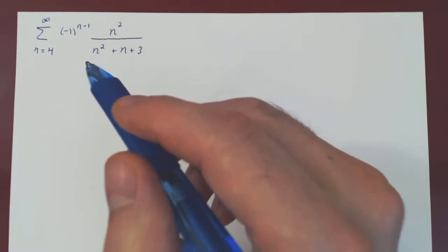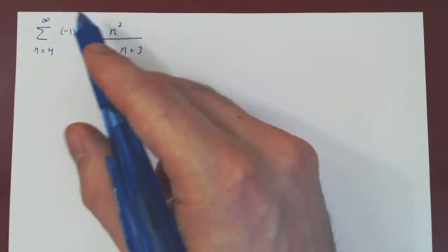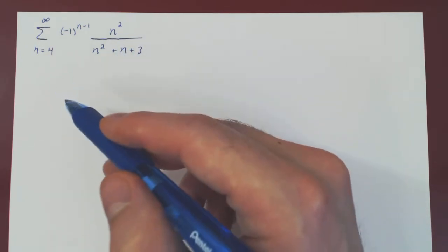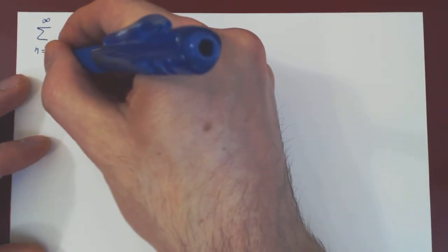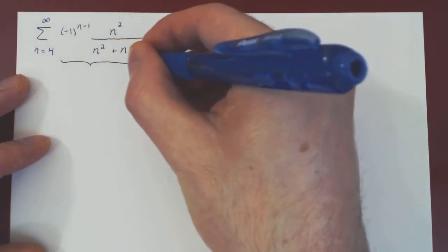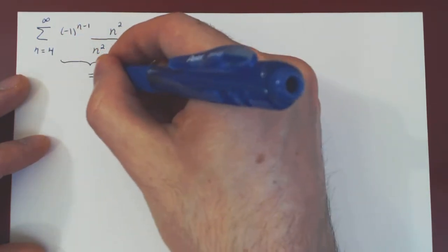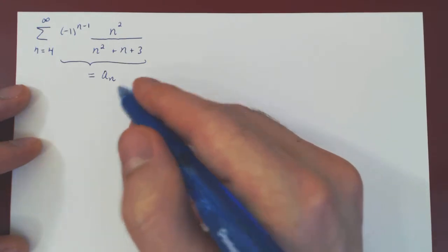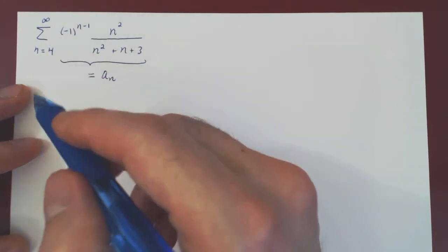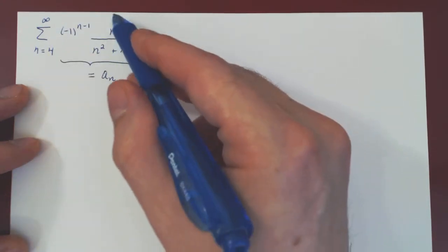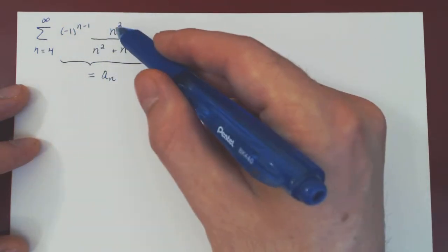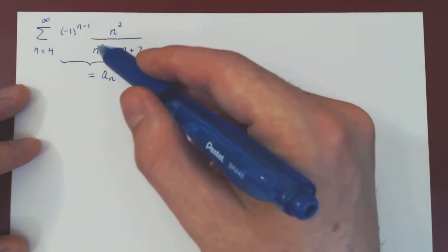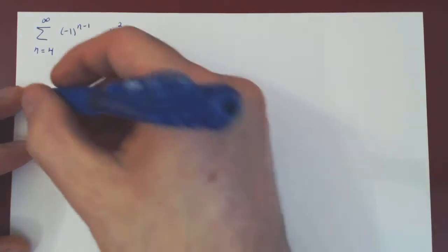Okay, so in this video, we will try and determine whether the alternating series converges or diverges. We're looking at summing the terms of this sequence, which we call as usual An. Now that we have an alternating series, we consider the positive part of the sequence without the alternation. So, bn is n squared over n squared plus n plus 3.